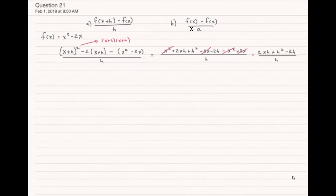So what does that leave us? That leaves us 2xh + h² - 2h in the numerator, and in all three of those terms there's a factor of h. So I'm going to rewrite this, and I see I can divide out an h from both my numerator and denominator. So my final answer is 2x + h - 2, and that's the answer to part a.